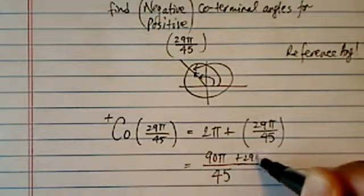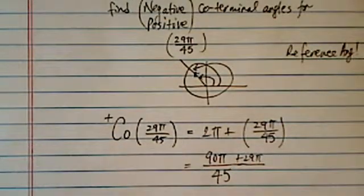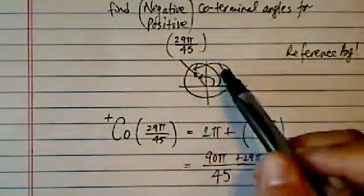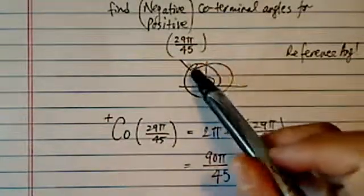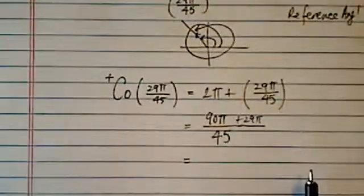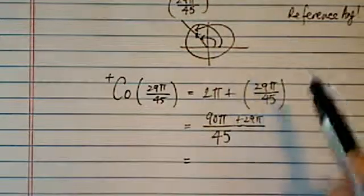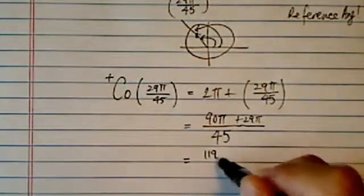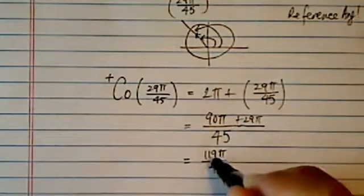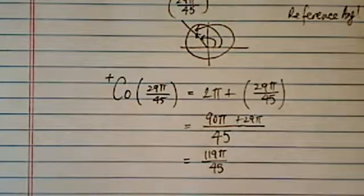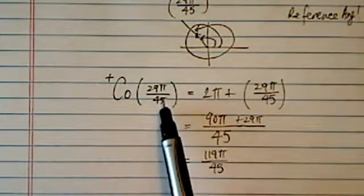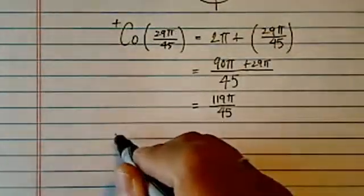Plus 29π over here. So basically, instead of getting off the first time, you take the train around one more time and get off on the second time. One round of circle is 2π, so here we have 119π over 45. So this 119π over 45 is a coterminal angle to 29π over 45. That's the positive coterminal.